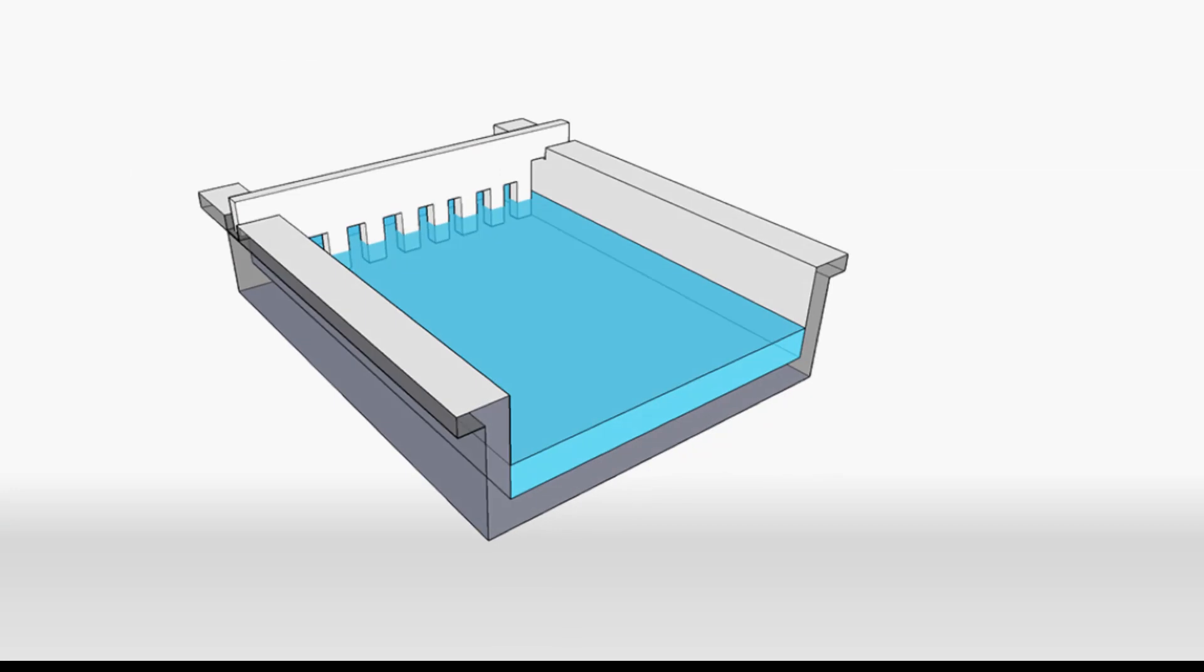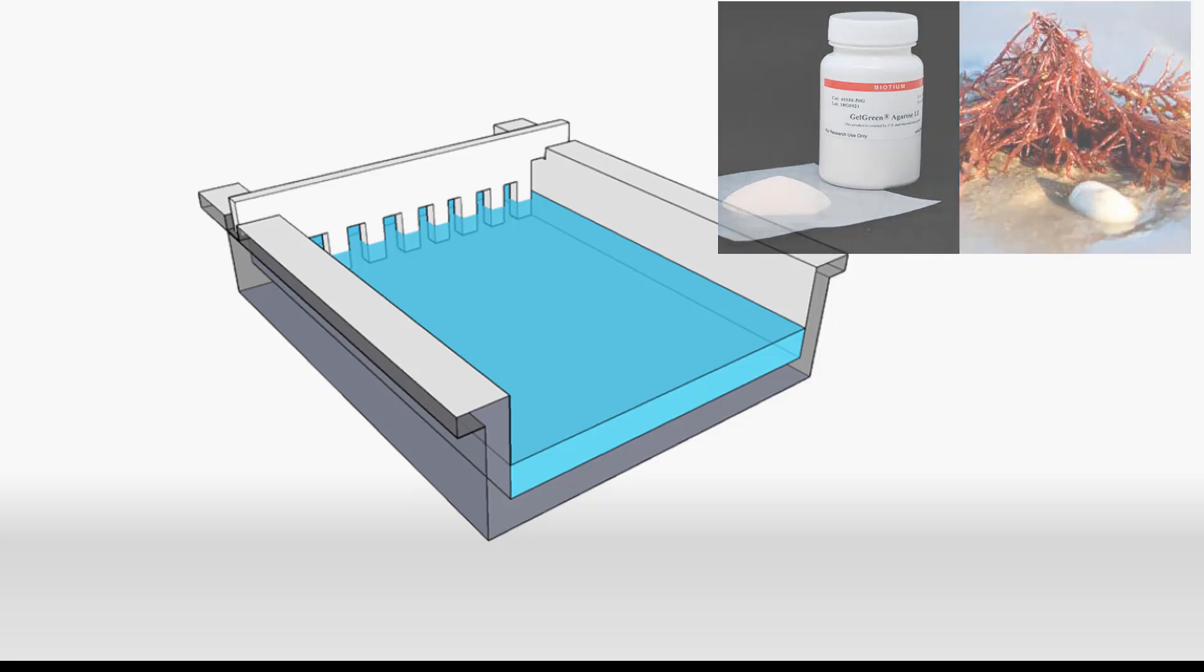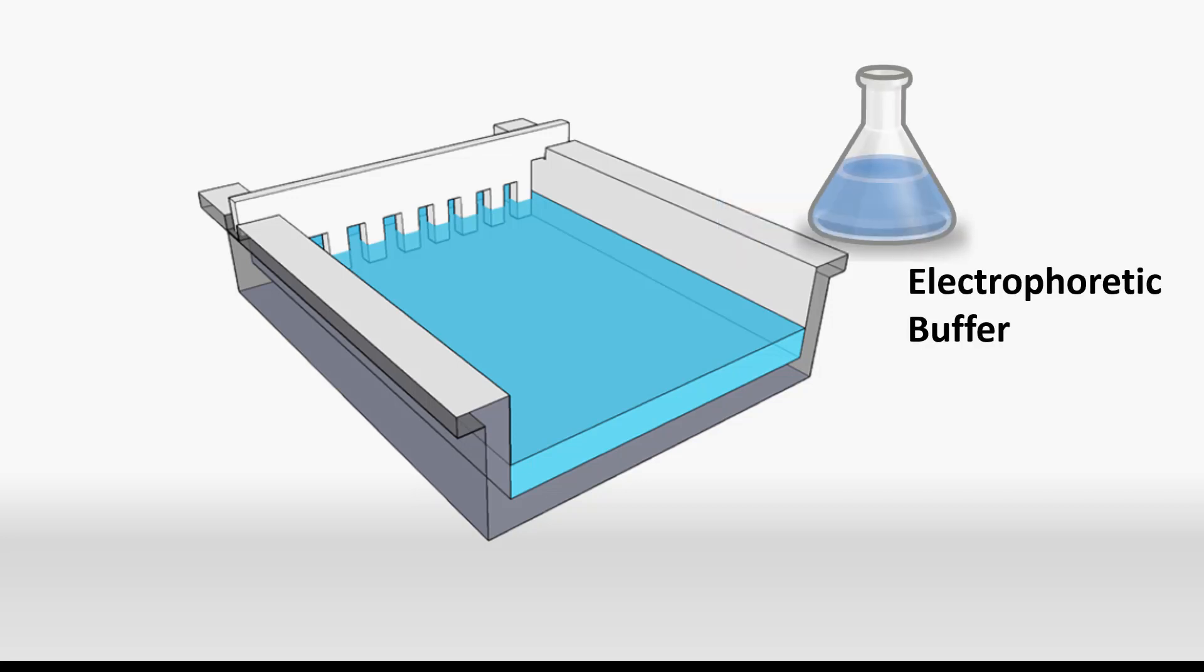The first step in gel electrophoresis is to prepare the gel. For the separation of DNA, we use an agarose gel. Agarose is a polymer derived from red seaweed, commercially available as a powder. This is added to a buffer and the solution is poured into a casting tray.